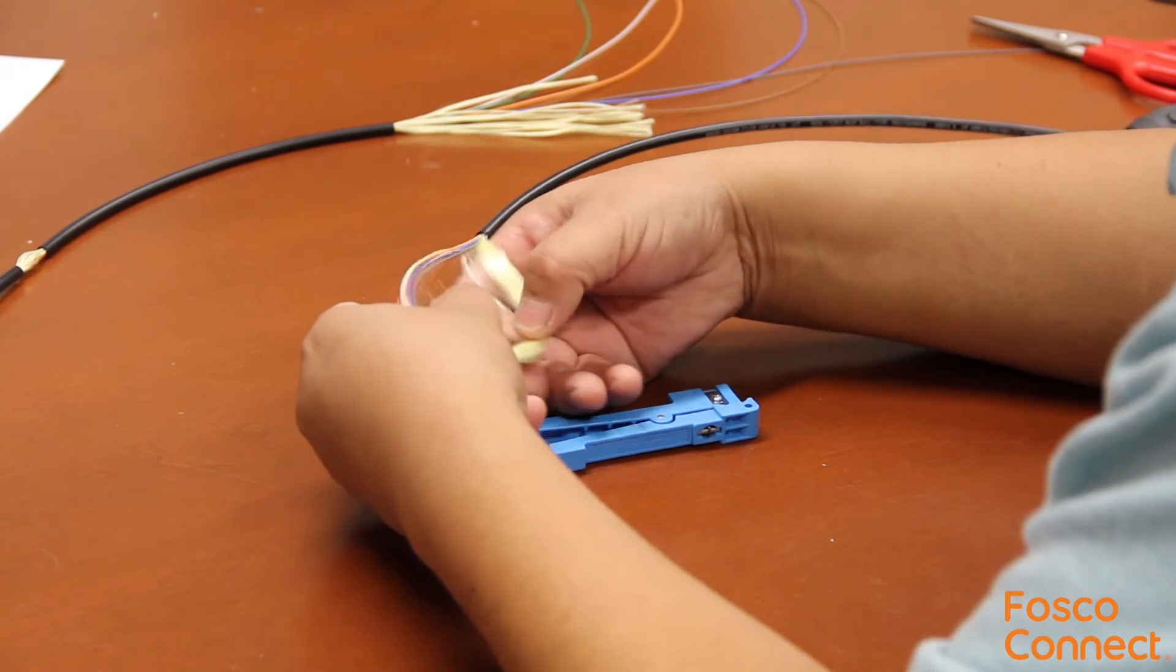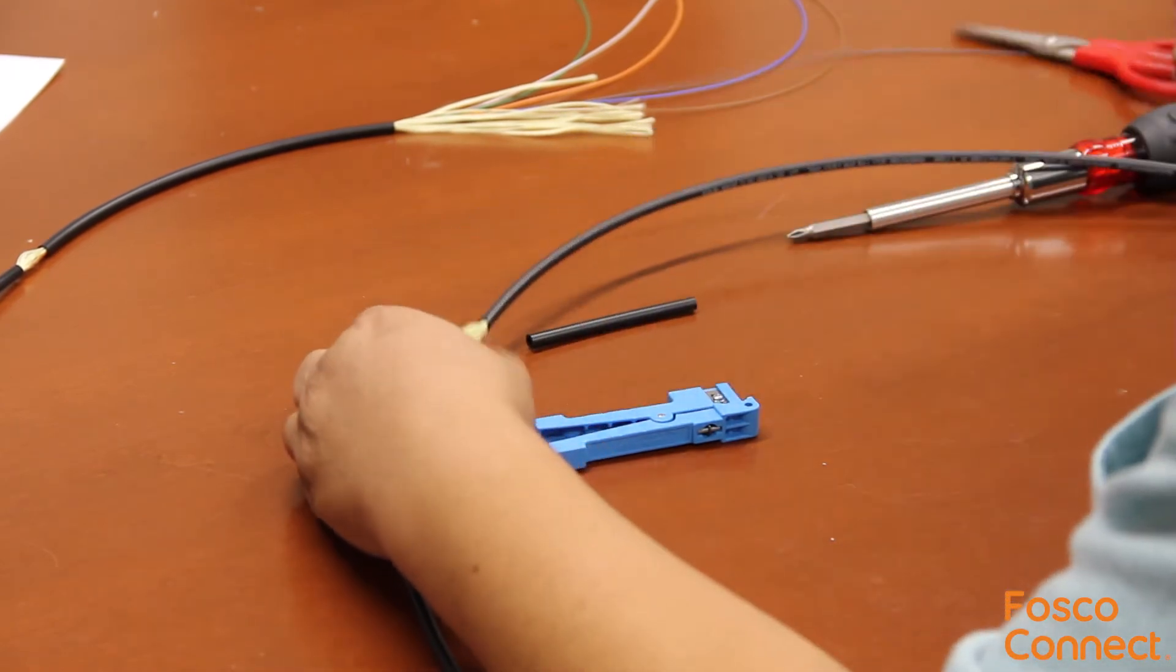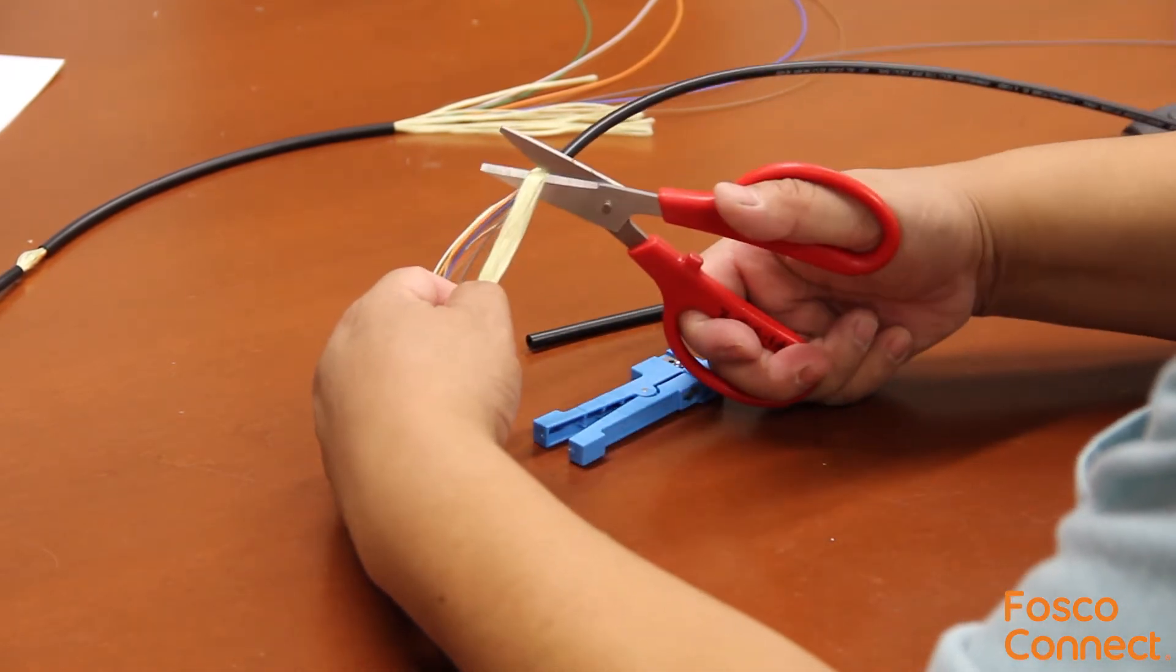Now let's remove the Kevlar fiber strength member and we will have full access to the fibers inside.